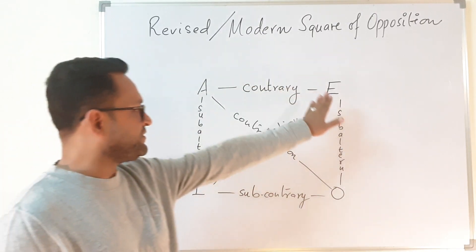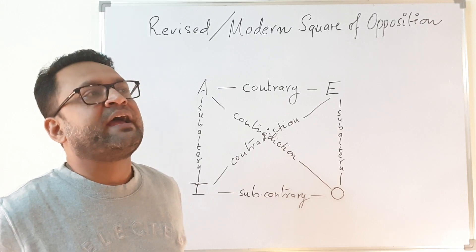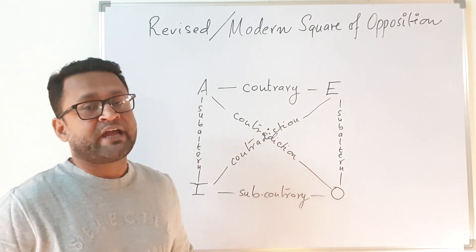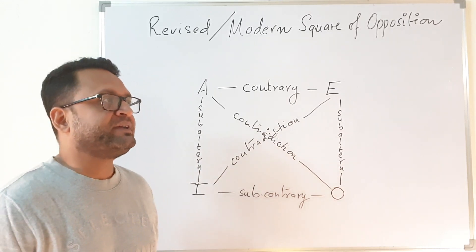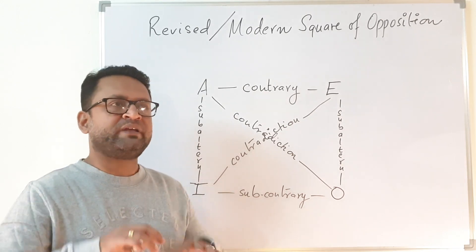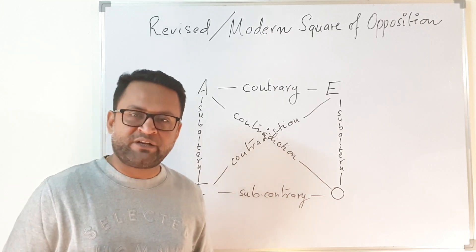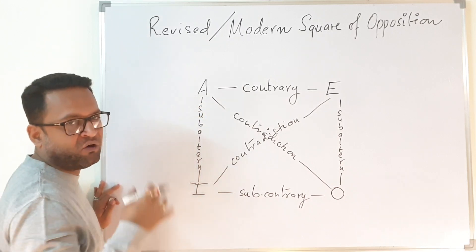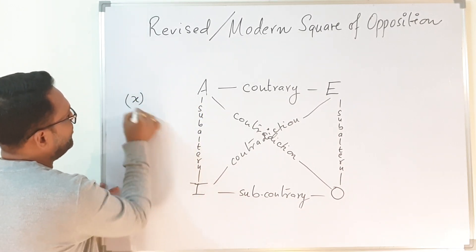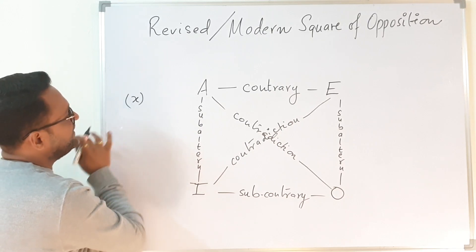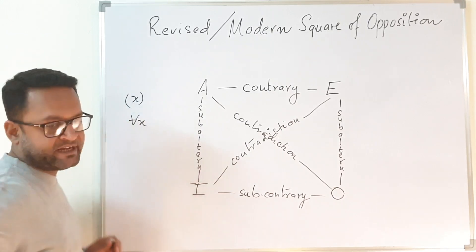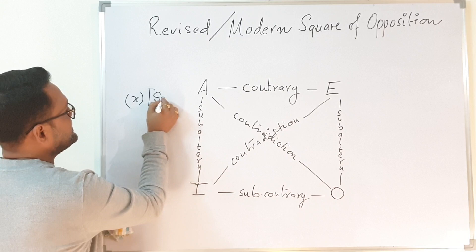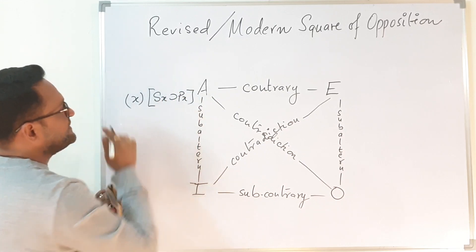You may not yet know the symbolizations of A, E, I, and O — we will discuss that when we cover quantification theory after completing categorical propositions and categorical syllogism. But for now, please trust that what I am telling you is correct. The symbolization of an A proposition — 'All S is P' — is symbolized as: for all x, Sx implies Px.